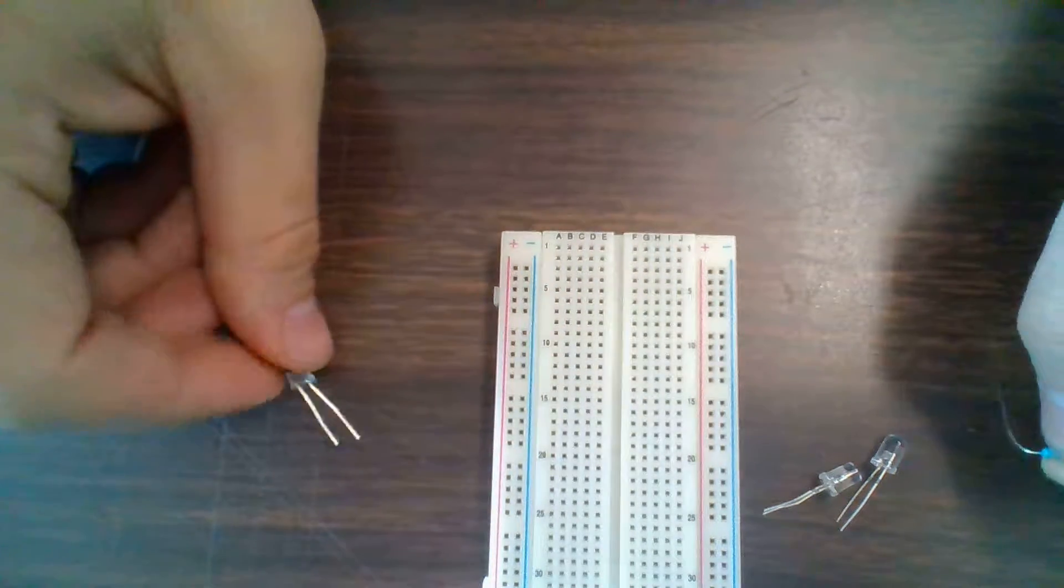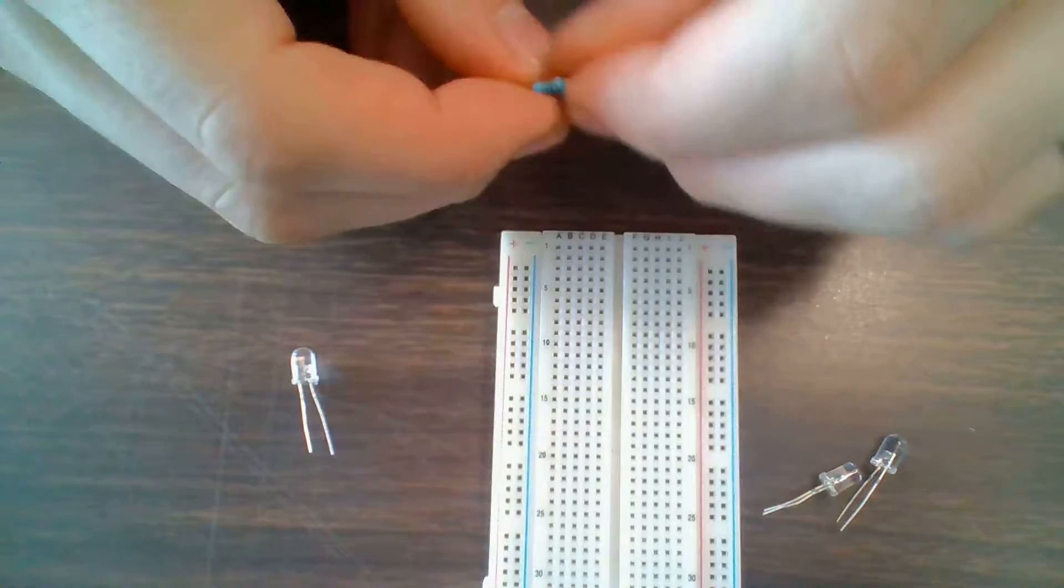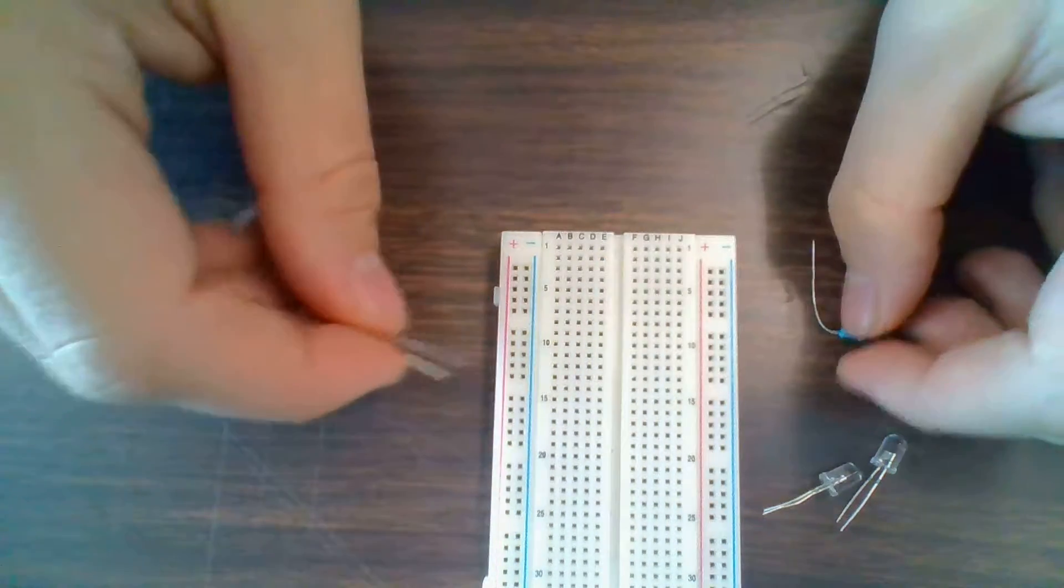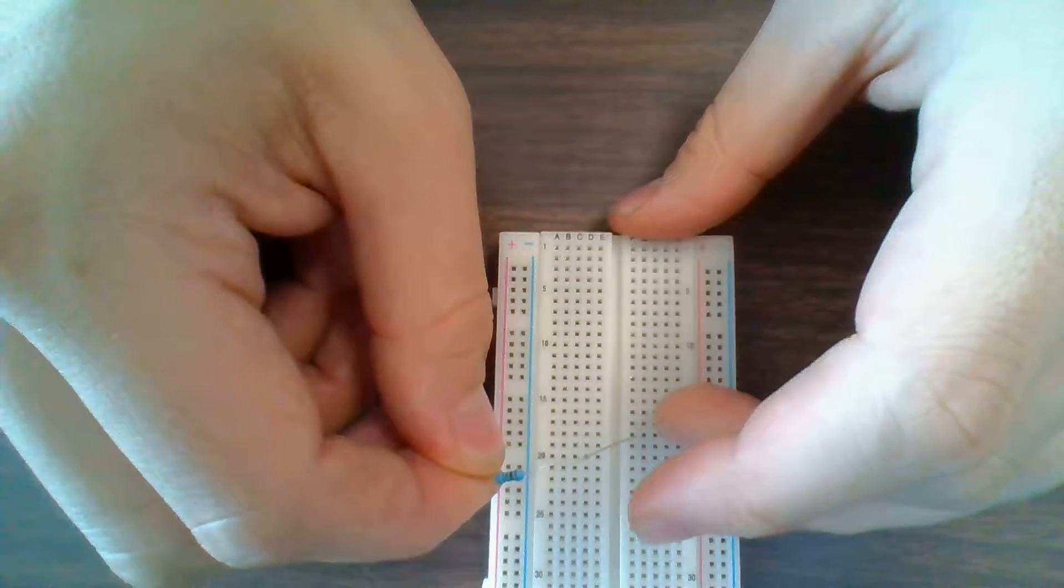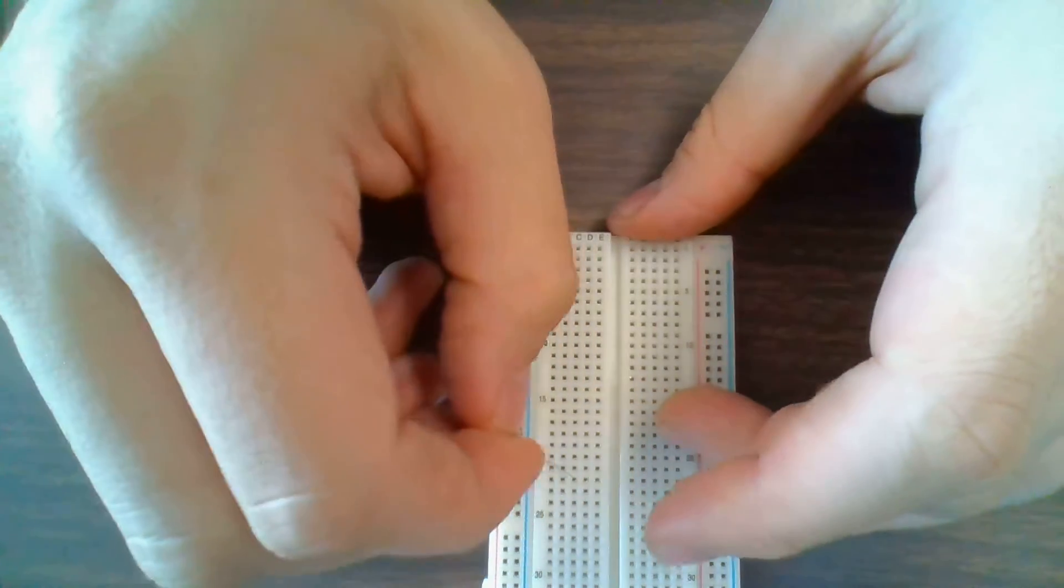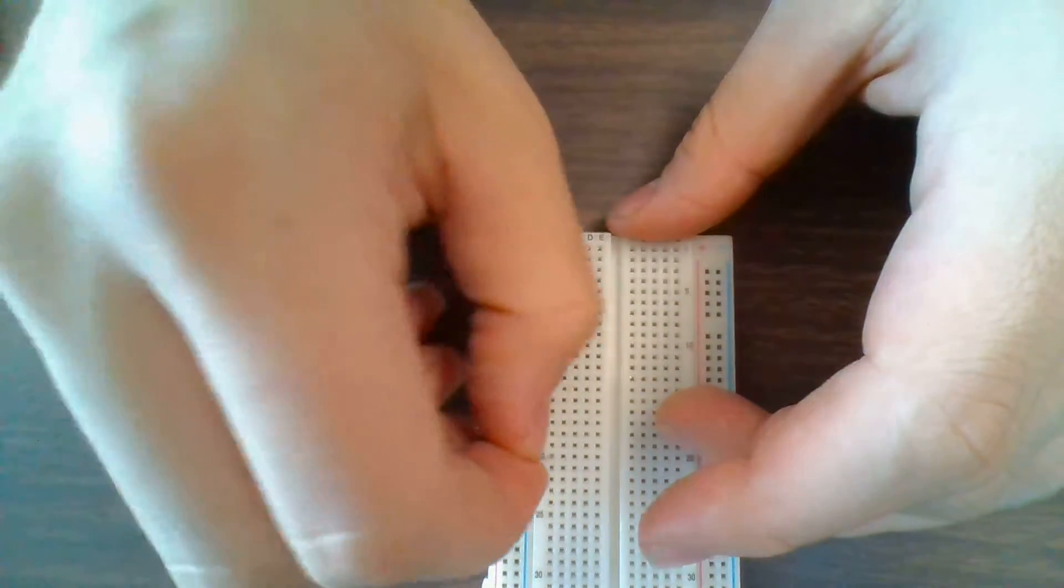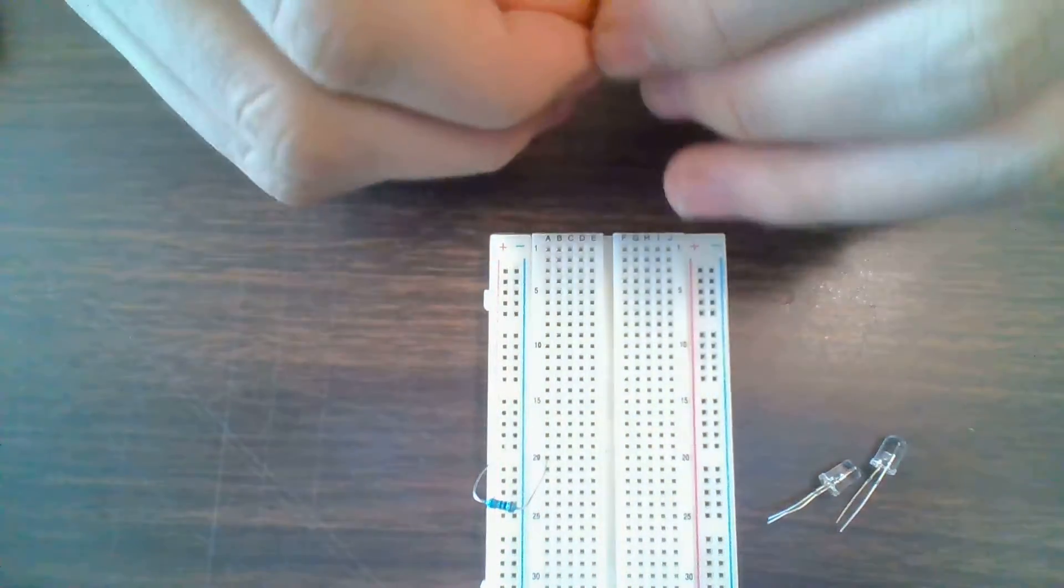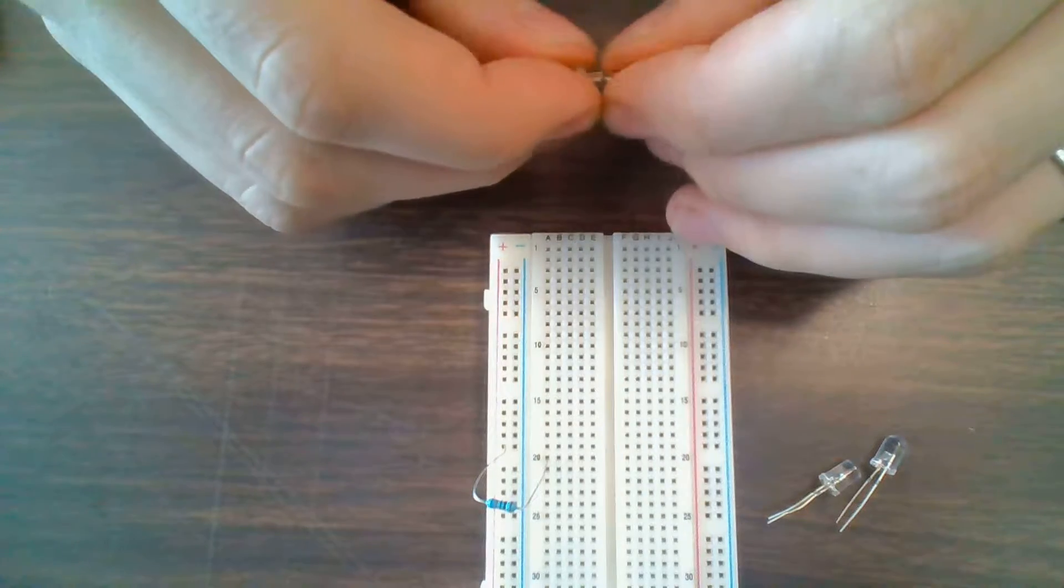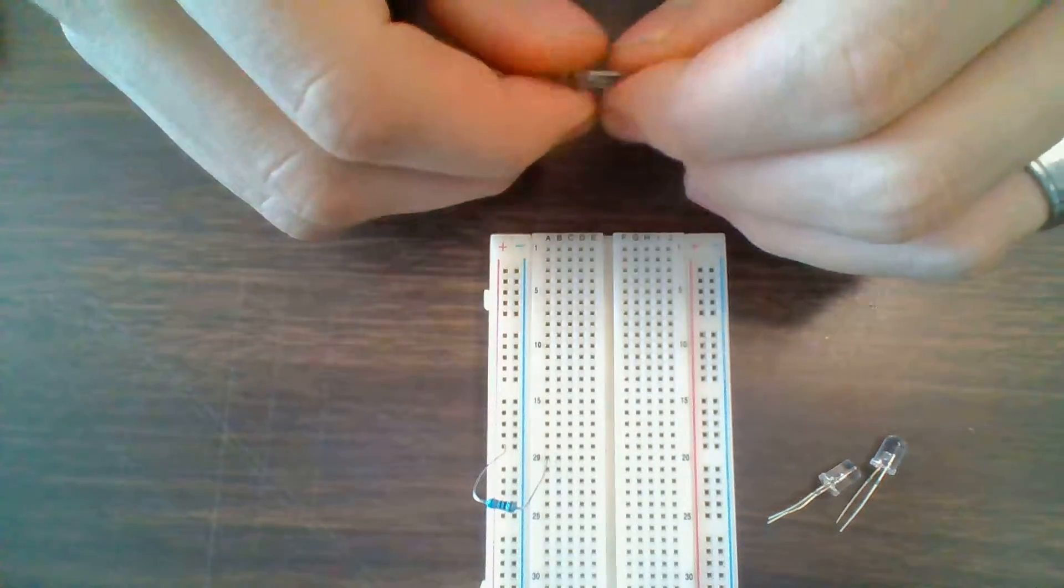So what I'm going to do is I'm just going to create a simple circuit with a resistor and an LED. I'm going to connect my resistor to my power source, so I'll connect it here and then connect that to row 20. Okay, so I have my resistor connected.